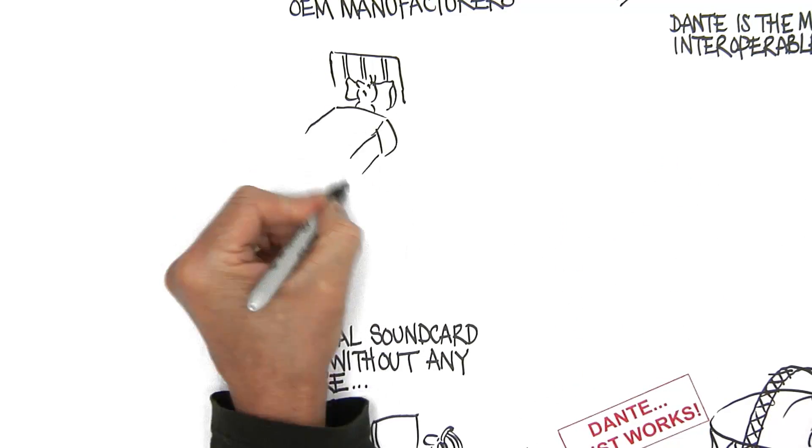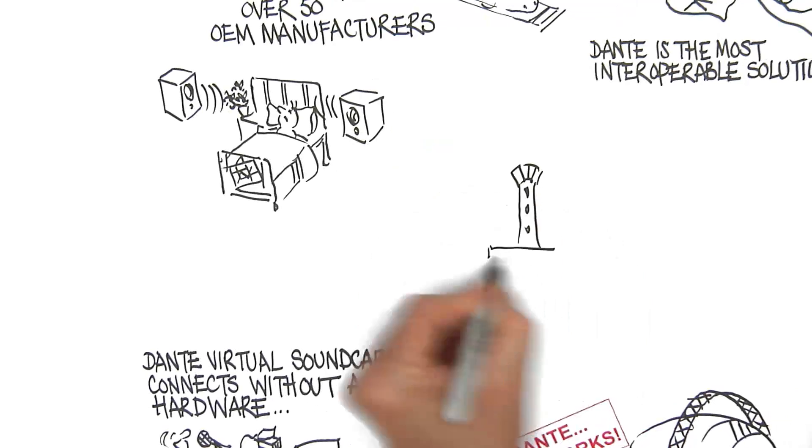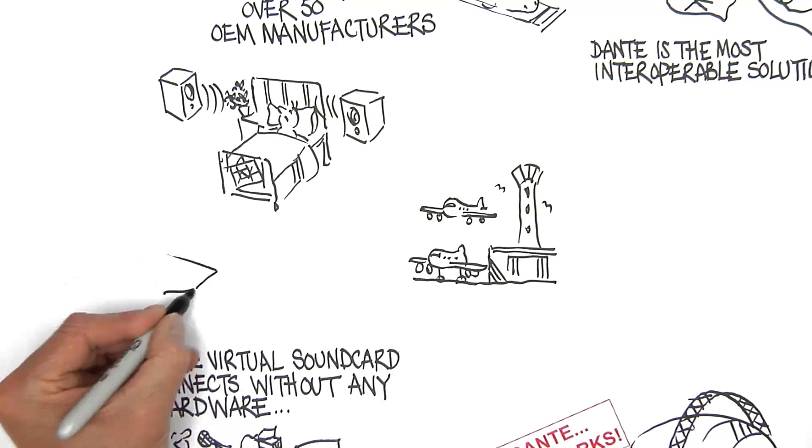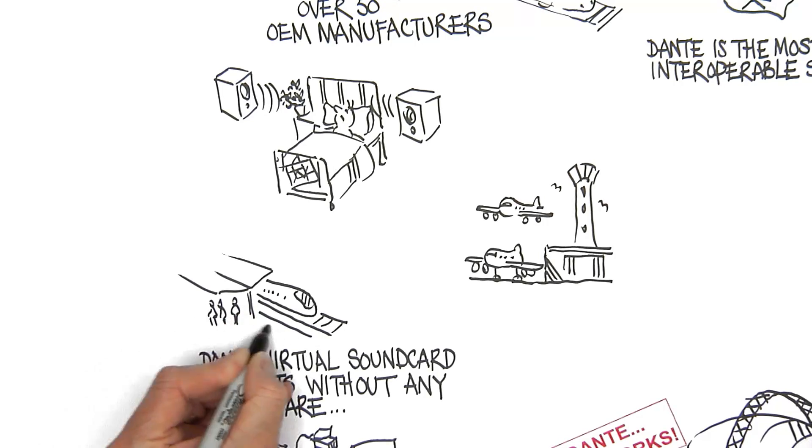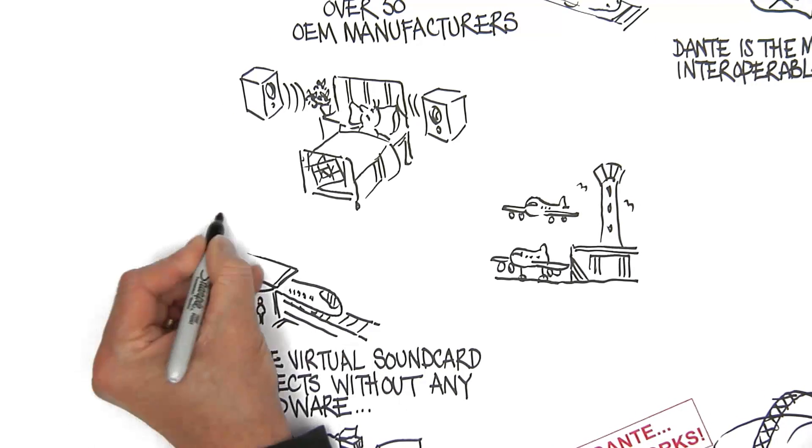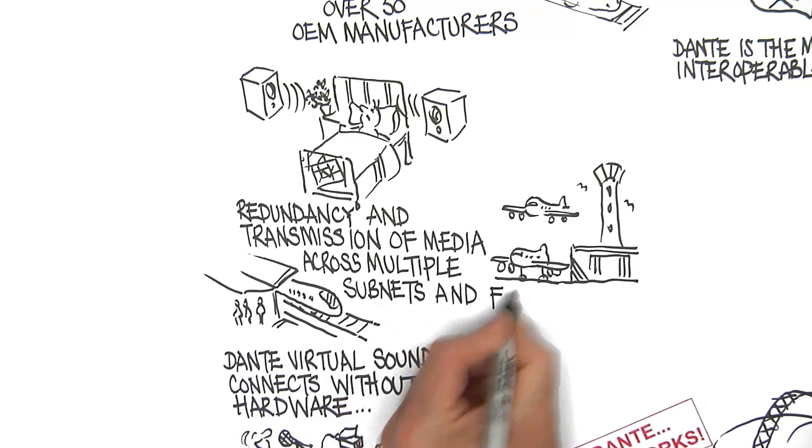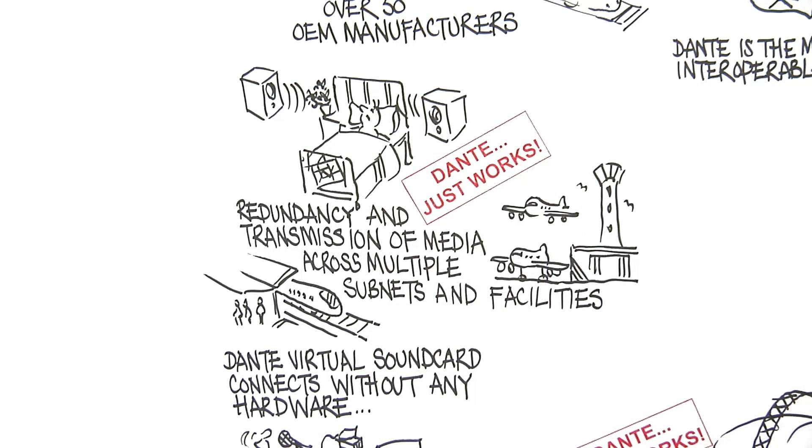University campuses, hospitals, stadiums, airports, voice evacuation systems, public address systems, and rail transportation centres all require redundancy and transmission of media across multiple subnets and facilities. Dante just works.